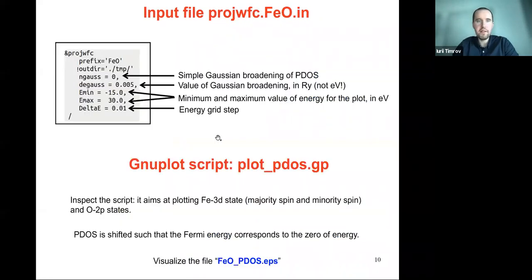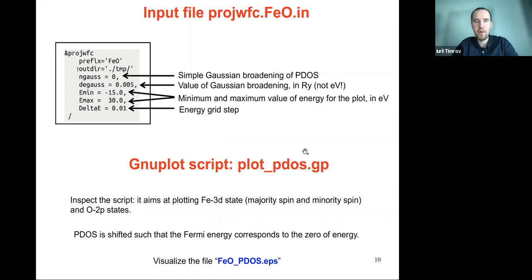The last step is calculation of the projected DOS (PDOS). In the input file we specify the smearing type (Gaussian), the broadening in Rydberg units, and the energy range and step for plotting. Once done, we use a GNUplot script called plot_pdos.gp to plot the spectrum.